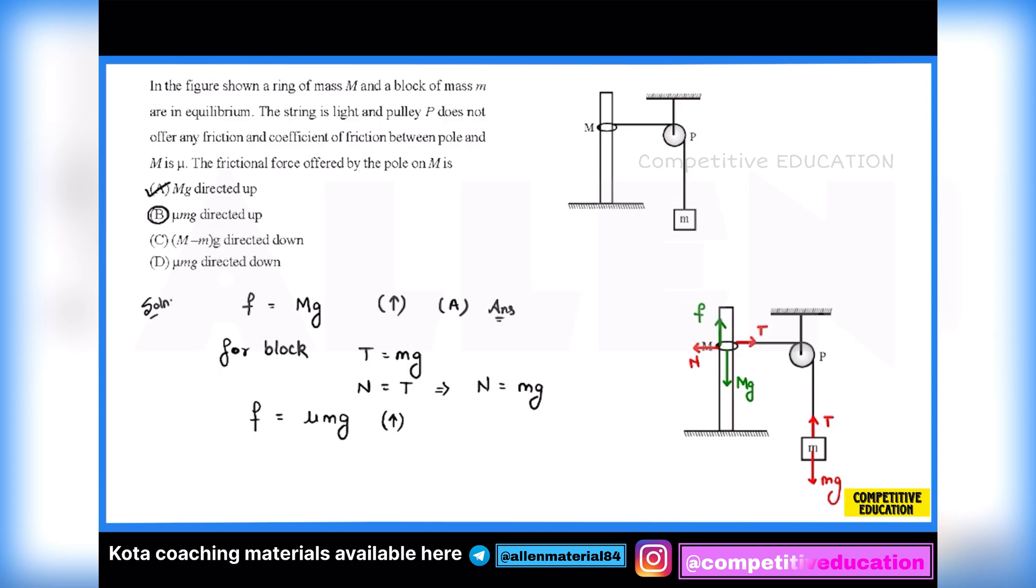But see, this value that you have achieved is limiting static friction, which is the maximum value of this friction. This is the maximum value. This value of friction might be applied or might not be applied. I cannot comment on it because we know that static friction is self-adjusting in nature.